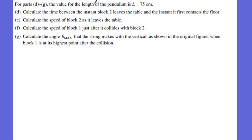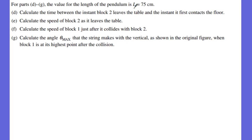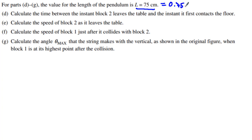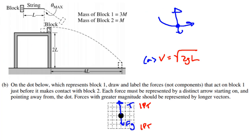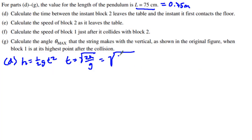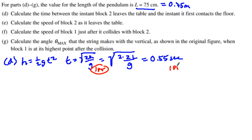Part D gives us L = 75 centimeters or 0.75 meters — remember everything must be in SI units. We want the time between block two leaving the table and hitting the floor. That is a kinematics problem: h = ½gt², so t = √(2h/g). The height of the table is 2L, so t = √(2 × 2L / g). Plugging in numbers gives 0.55 seconds. One point for setting up the kinematics, one point for the answer of 0.55 seconds.